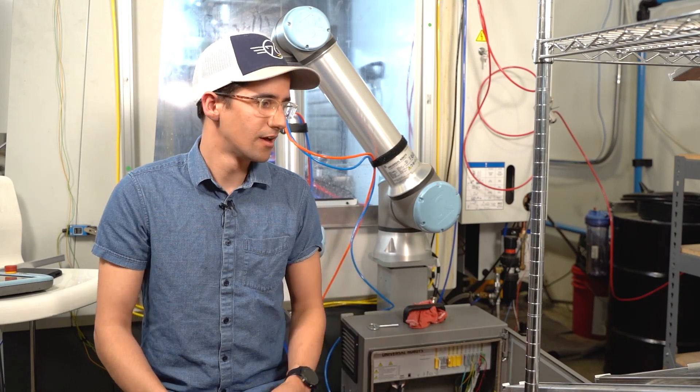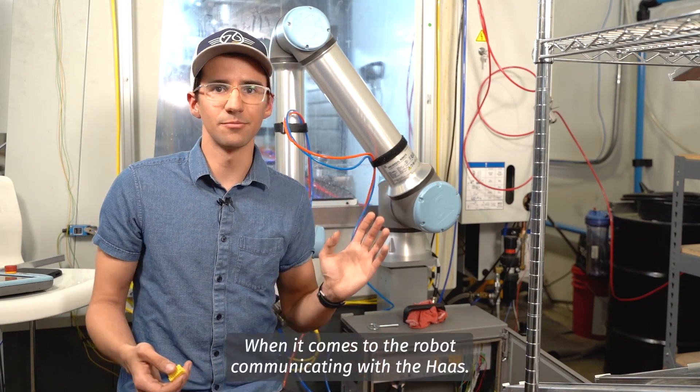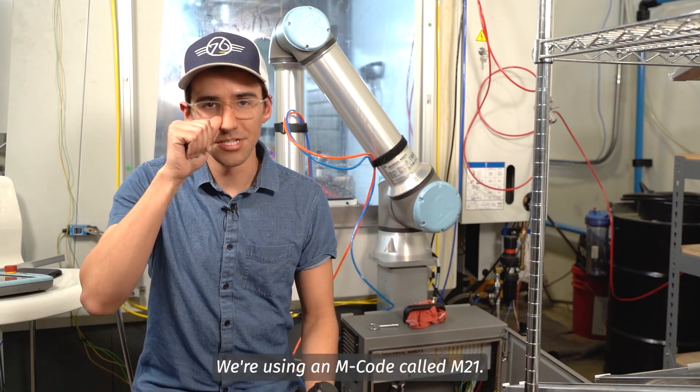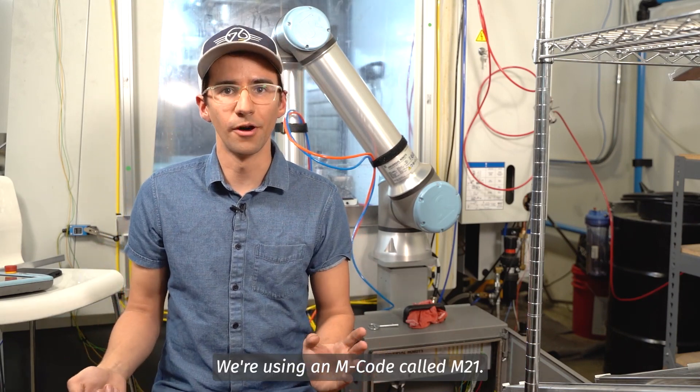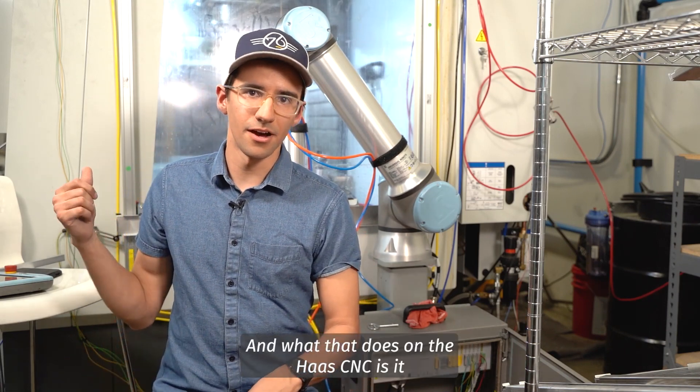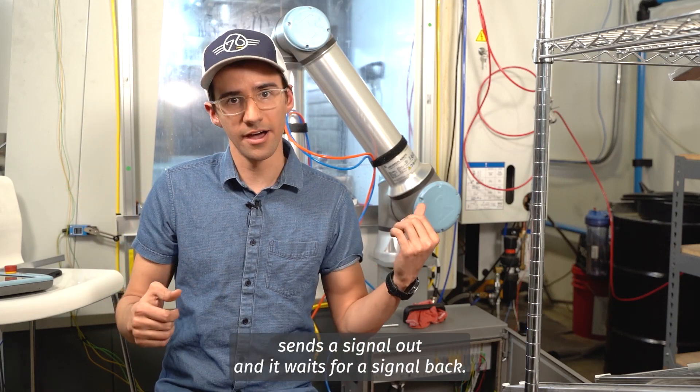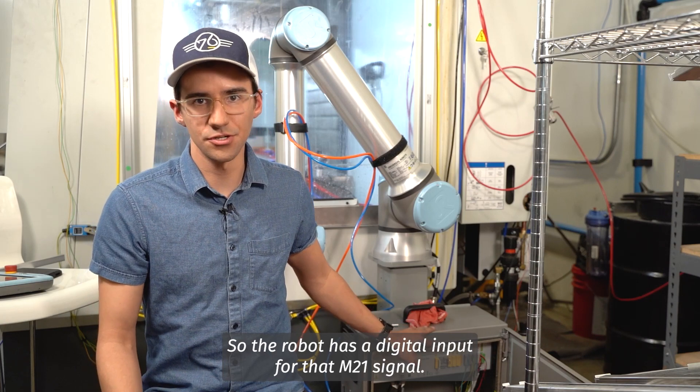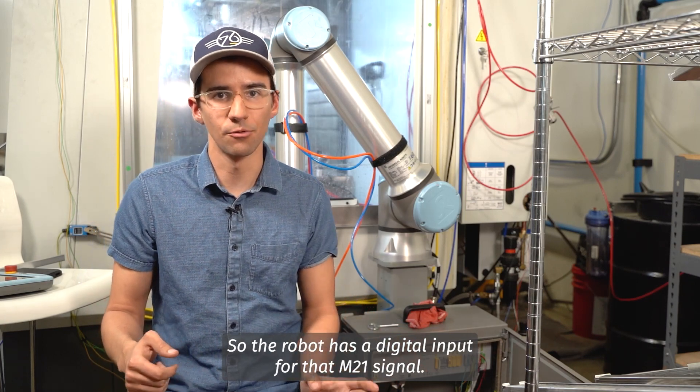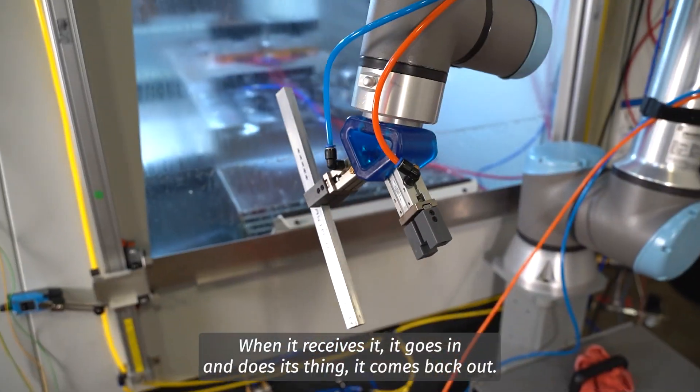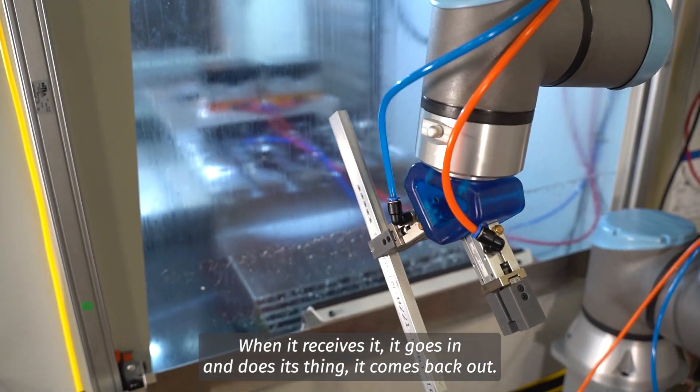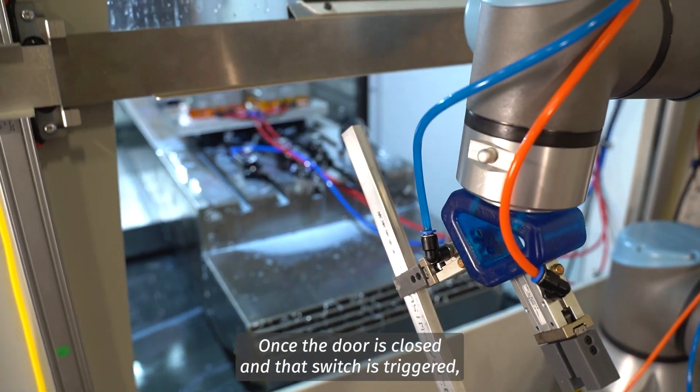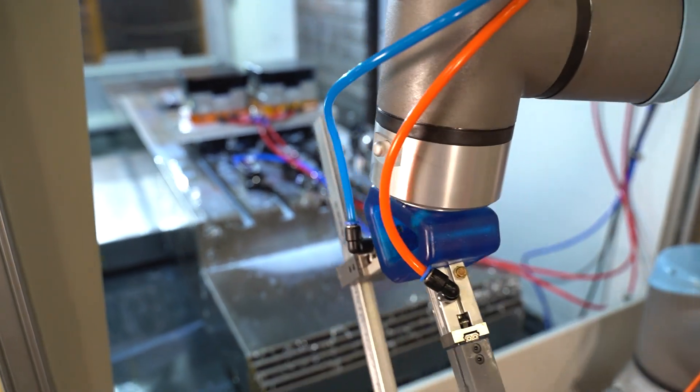When it comes to the robot communicating with the Haas, we're using an input called M21, and what that does on the Haas CNC is it sends a signal out and it waits for a signal back. So the robot has a digital input for that M21 signal. When it receives it, it goes in and does its thing. It comes back out. Once the door is closed and that switch is triggered, it'll send an MFIN signal back.